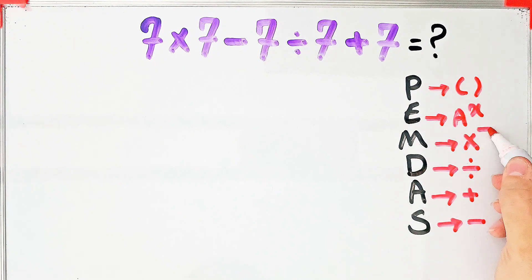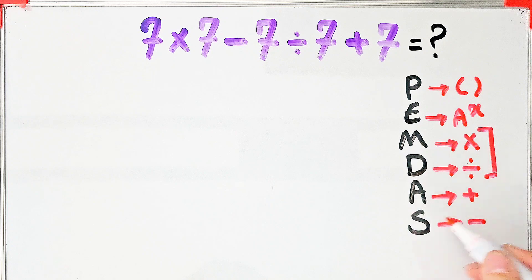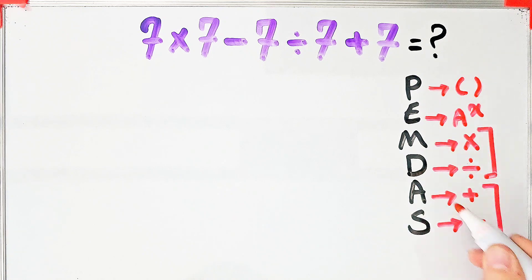Multiplication and division have the same level of priority, and addition and subtraction have the same priority. When we have both in an expression, we start from the left and simplify the question.